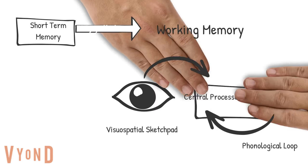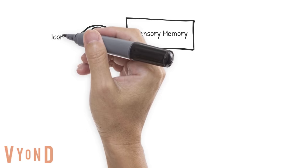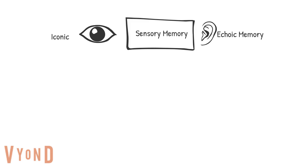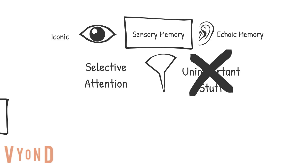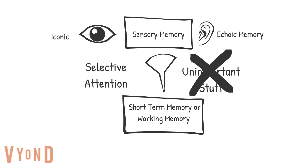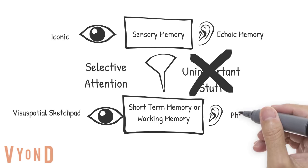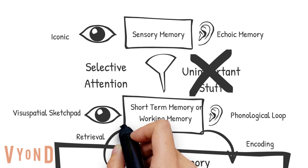So let's break it down. You have sensory memory — what your senses detect in your environment. Sensory memory for visual information is iconic, while sensory memory for auditory information is echoic. Sensory information goes through a filter called selective attention that removes unimportant information so it does not reach your short-term memory. Researchers came up with working memory, which is short-term memory with a visual component — the visuospatial sketch pad — and an auditory component — the phonological loop. Once information makes it to short-term memory or working memory, it gets stored into long-term memory through encoding. Long-term memories can be brought to consciousness through a process called retrieval.